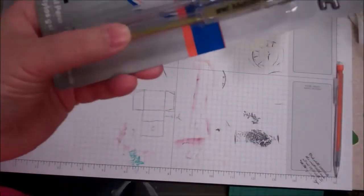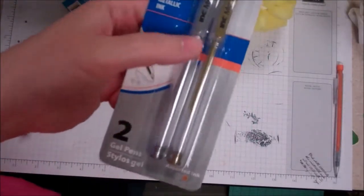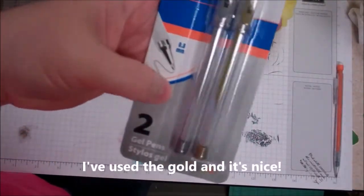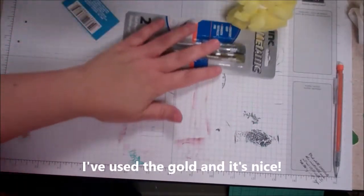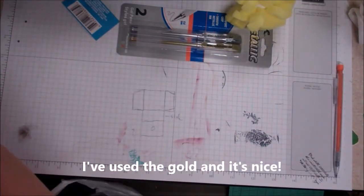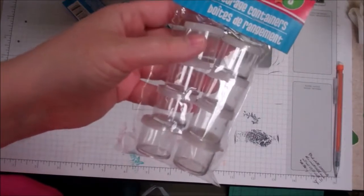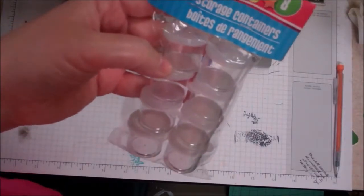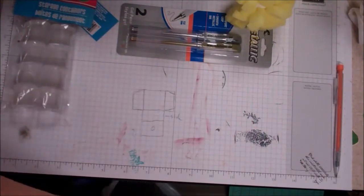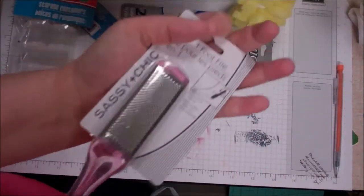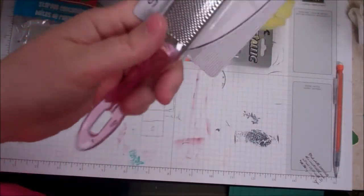They had some gel pens that are metallic in gold and silver, so that was a good deal - two gel pens there. I got some little canisters to organize some of my sequins and things, so you get eight of the storage containers.